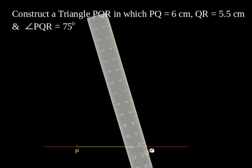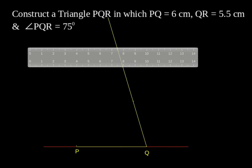With the help of a compass, Q as center and radius 5.5 cm draw an arc cutting the line segment at R.